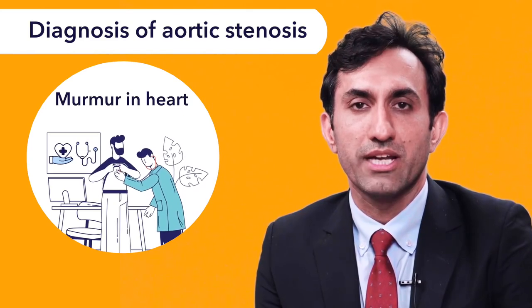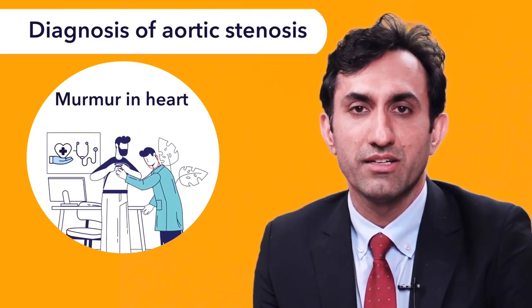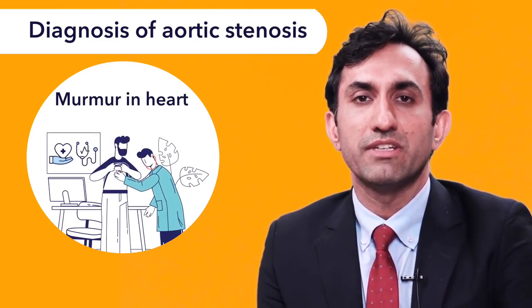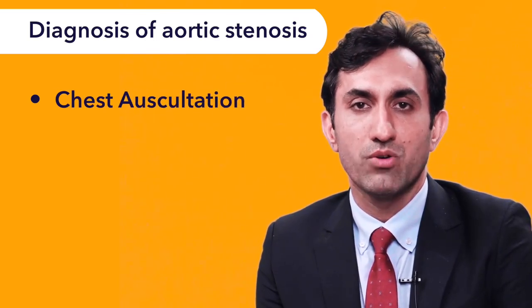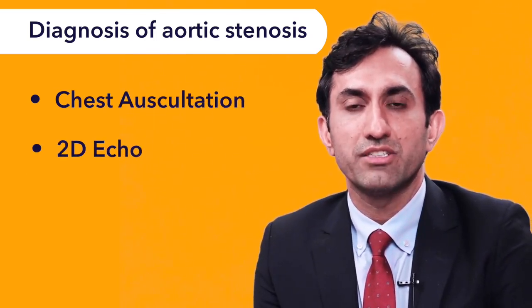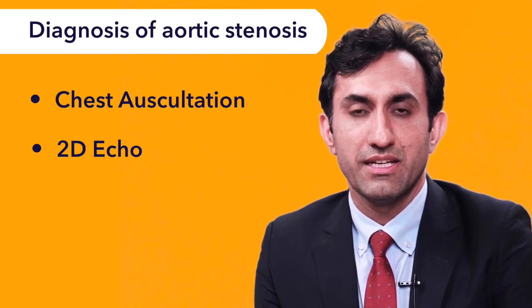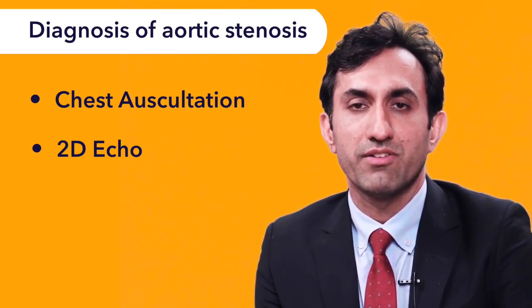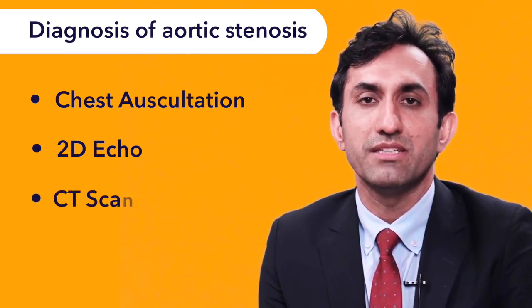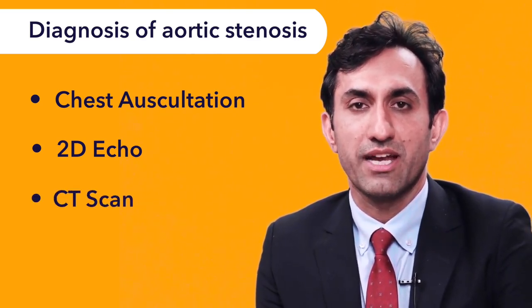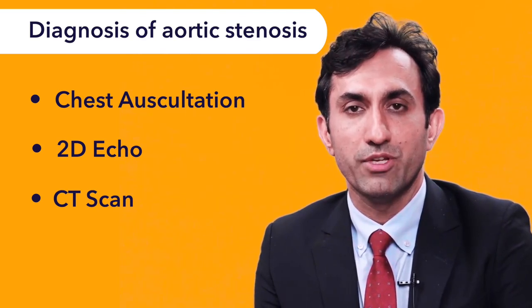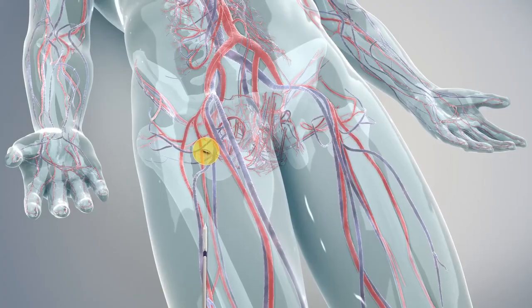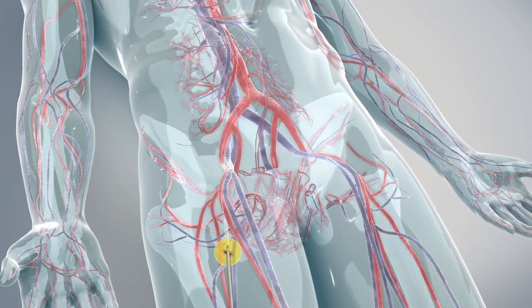If a patient has symptoms suggestive of aortic stenosis, the first step is to consult a physician who will auscultate and may find a heart murmur. This leads to a 2D echo, where the aortic valve functioning and opening are assessed. If the patient qualifies for a transcatheter aortic valve replacement (TAVR) procedure, a CT scan is then performed to determine the appropriate valve type and the size of the femoral vessels or other blood vessels through which the valve will be replaced.